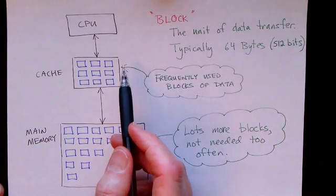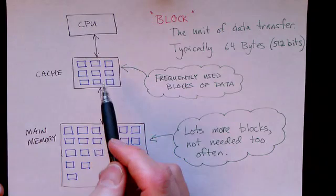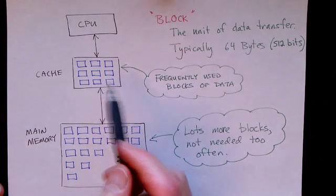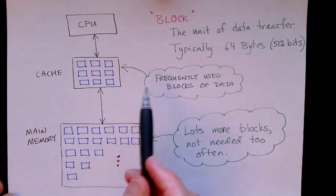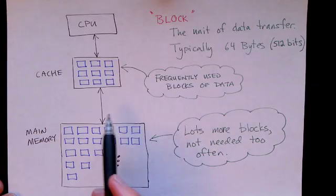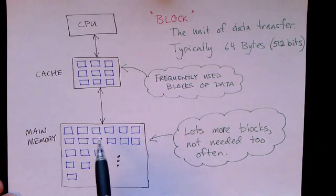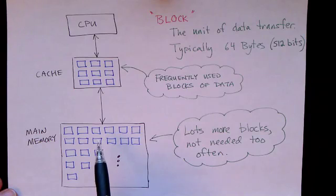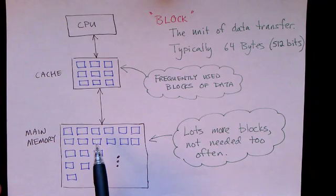So the idea is that the cache holds a small number of blocks, but these we hope are the frequently used blocks of data. The main memory holds a lot more blocks, and ideally these are blocks that we don't need quite as often.